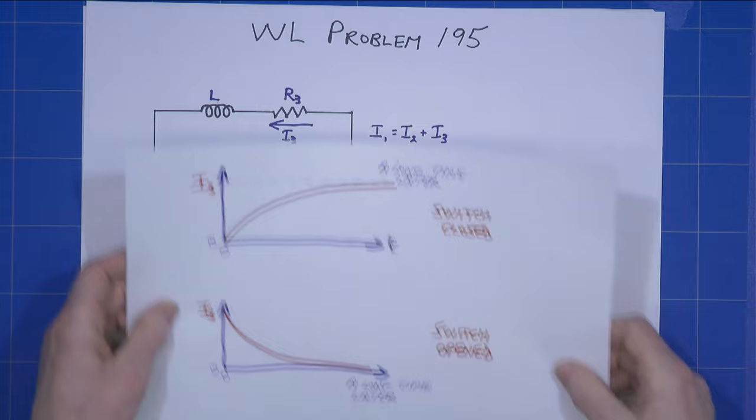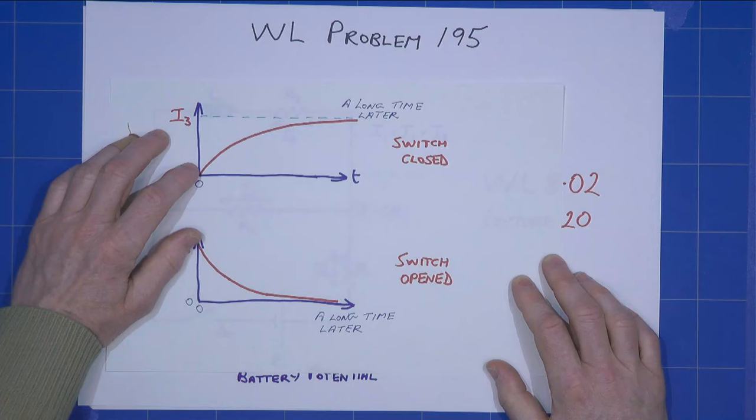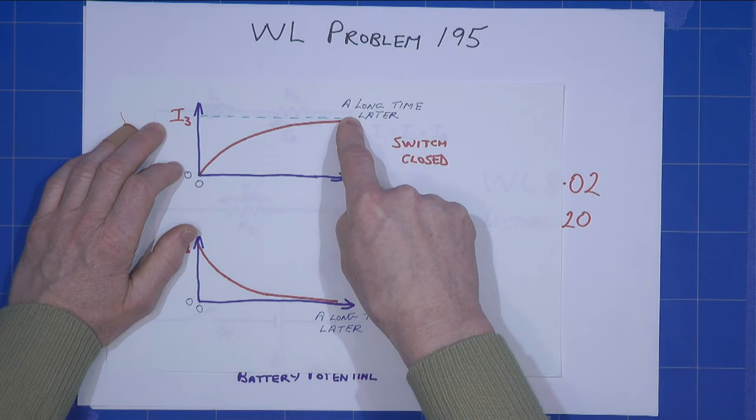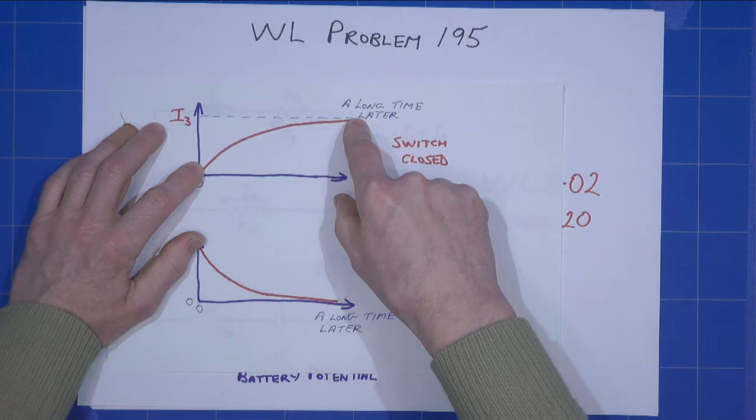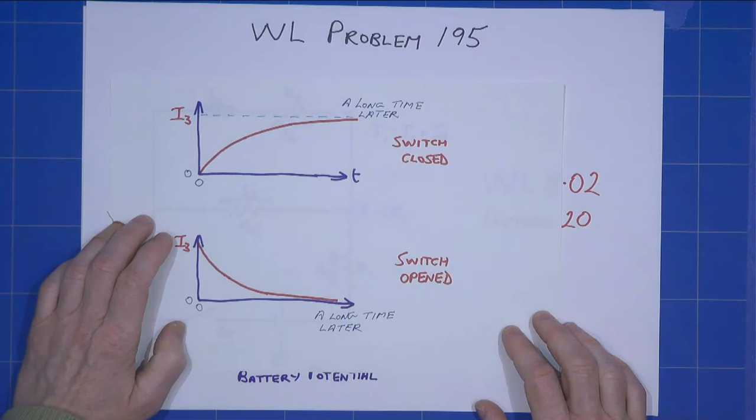But to remind you how current varies in an inductor, when we close the switch, the current cannot instantaneously change. It follows a curve. It's actually an exponential, but in this instance, it doesn't matter. It follows a curve from zero to some limiting value a long time later. That's what happens when the switch is closed.